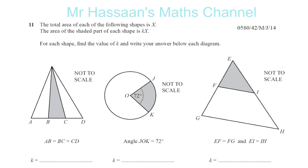Basically, the shaded area is some fraction of the whole area — the whole area is x. If we look at the first shape, we have a triangle. The area of a triangle is given by half times the base times the vertical height. For the big triangle, the base is AD and the height is the perpendicular height from the vertex down to the base.